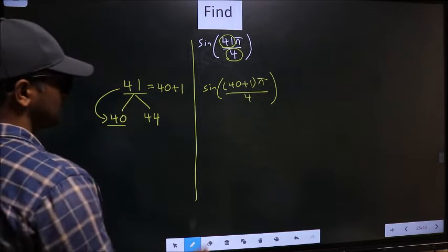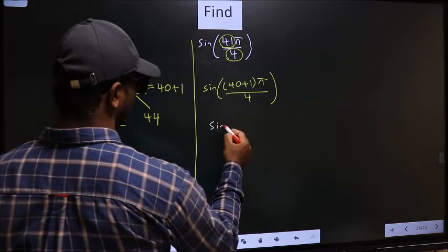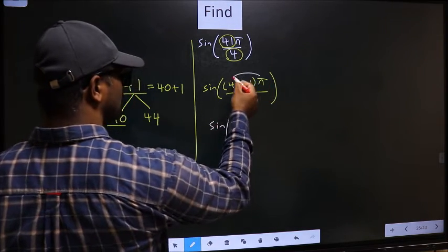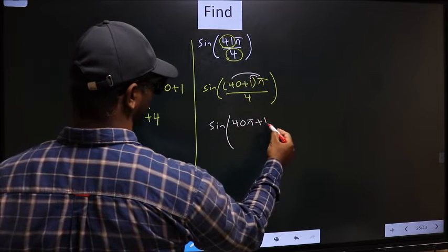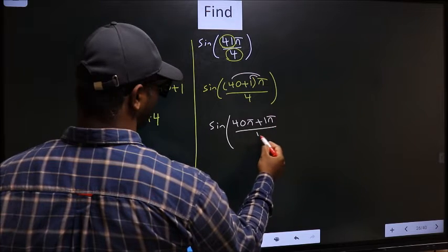Next, sin. Now you should open up the brackets. So we get 40π plus 1π by 4.